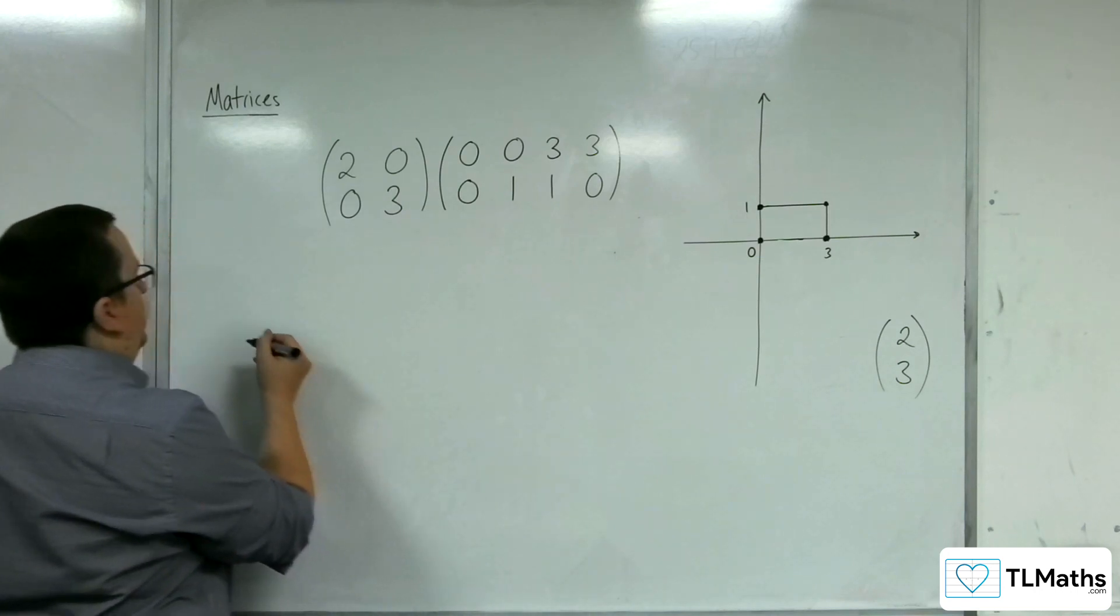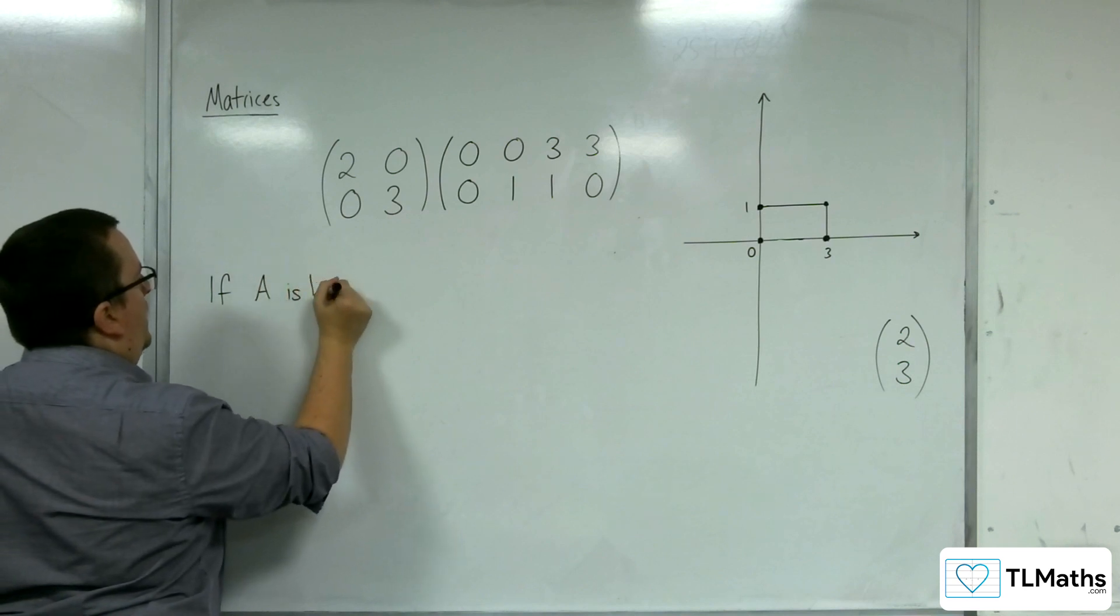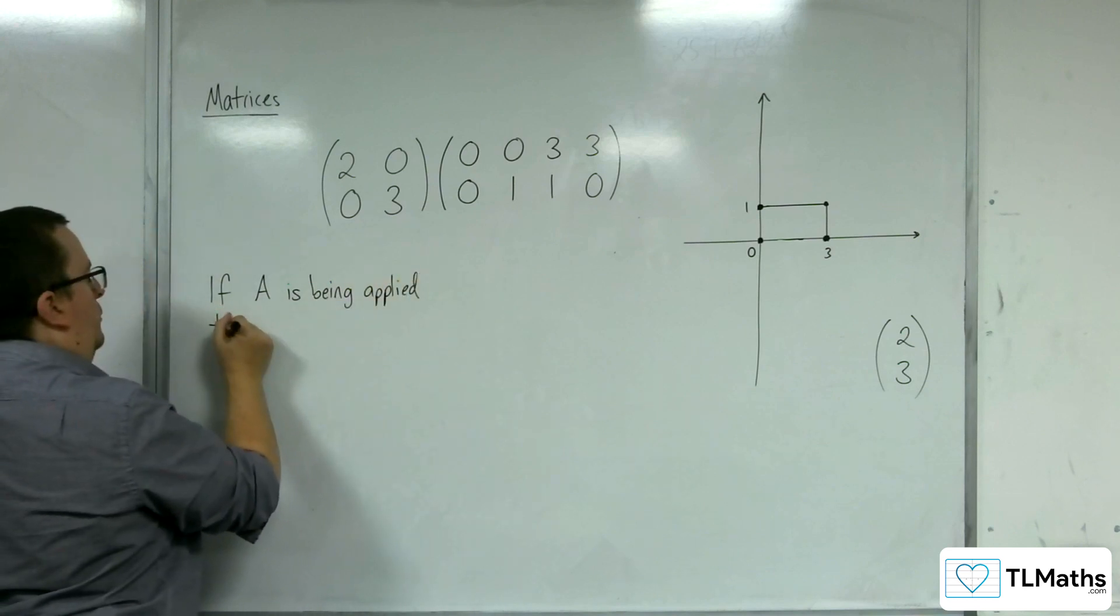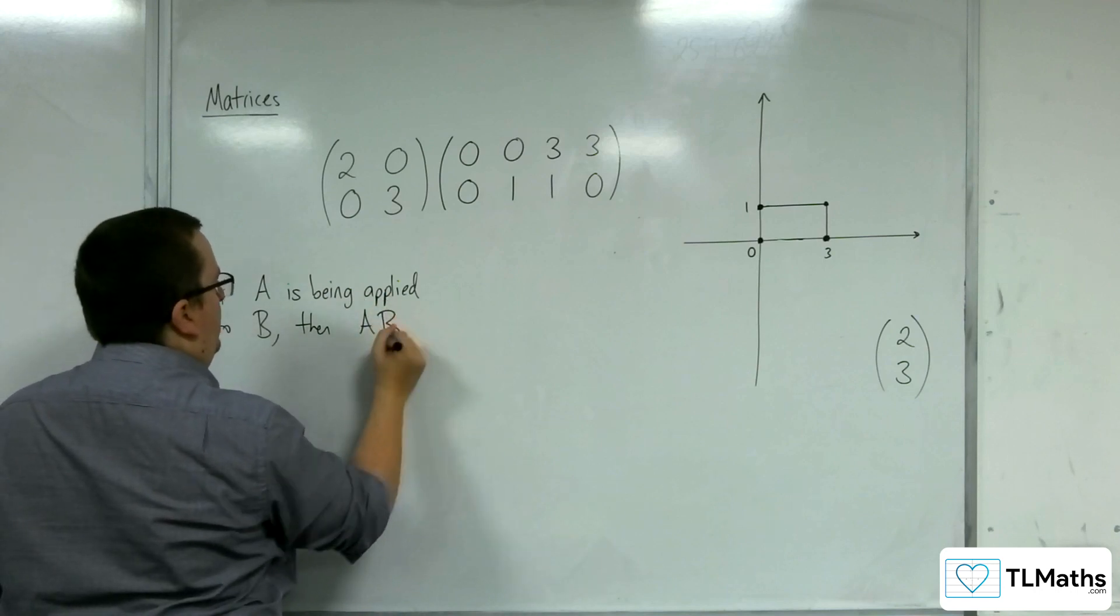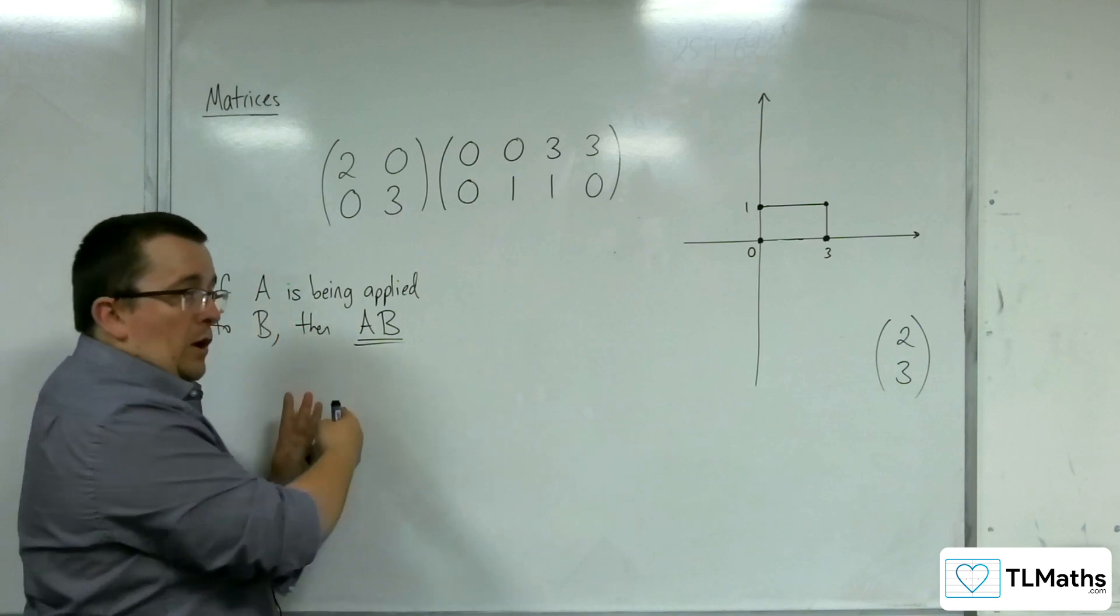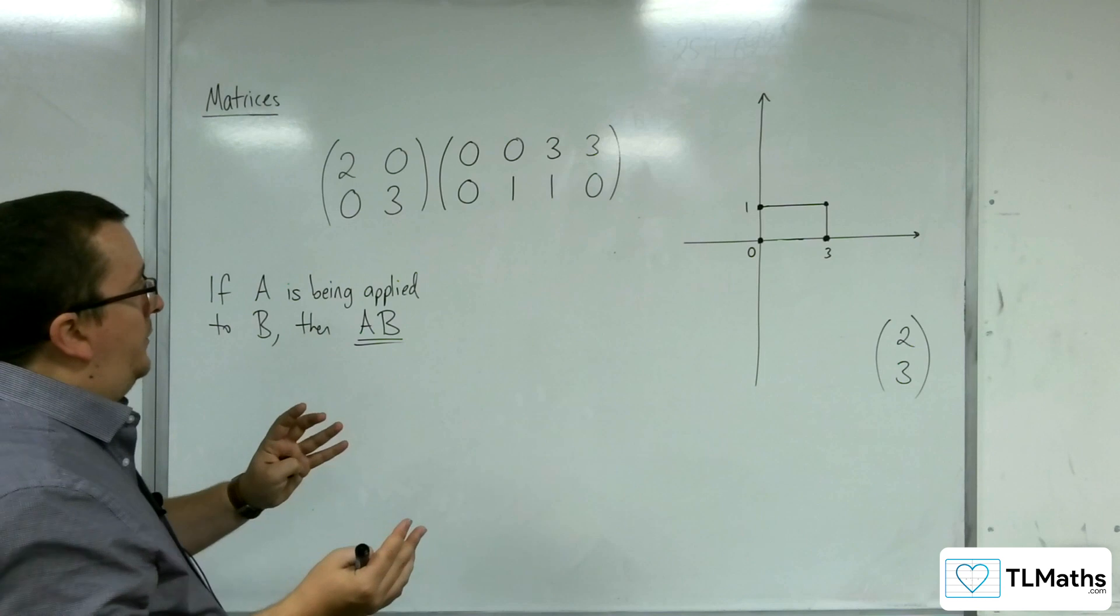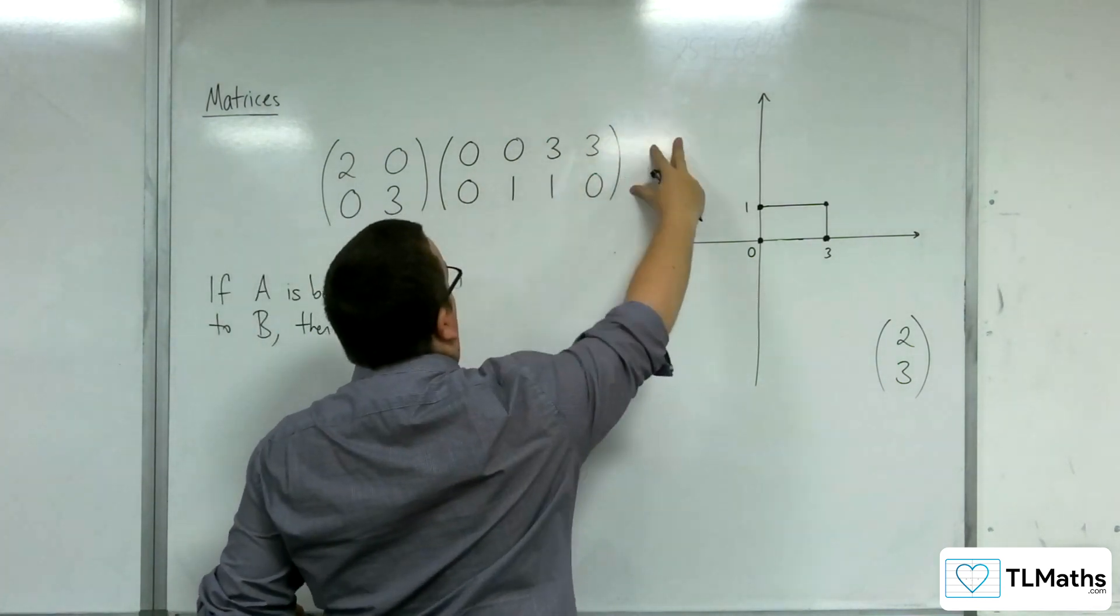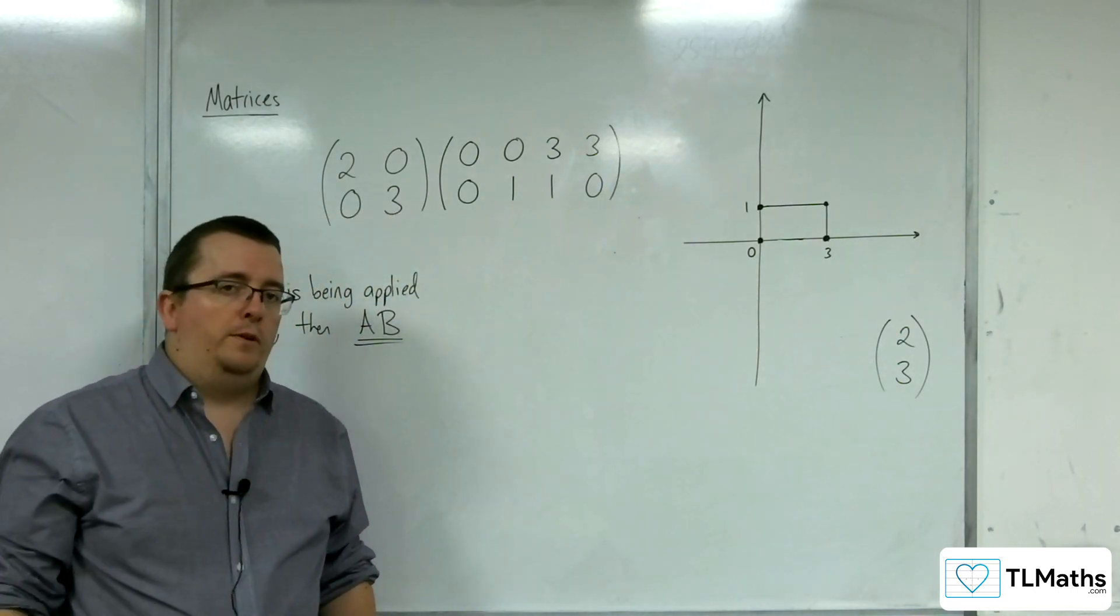So if A is being applied to B, then the order is AB. The A must go on the left-hand side. Now, with this case, there's no way that I would have been able to write 2, 0, 0, 3 on the right-hand side anyway, because we know that they would be non-conformable. It wouldn't work.